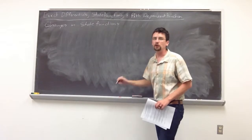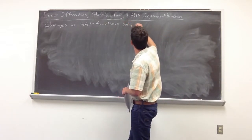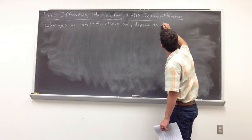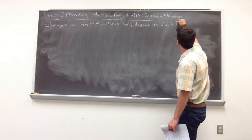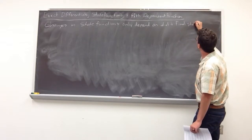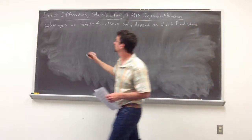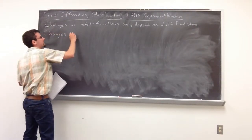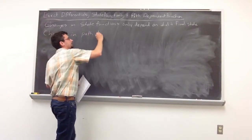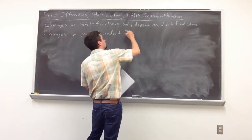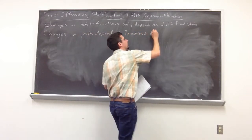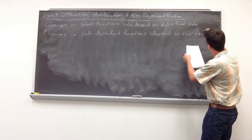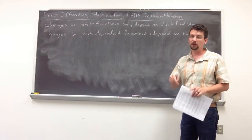Changes in state functions only depend on the initial and the final state. Whereas path dependent functions depend on the route between the initial and the final state.